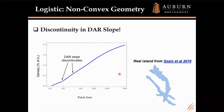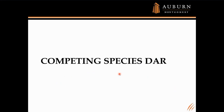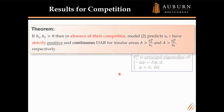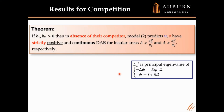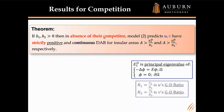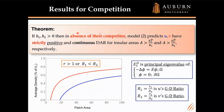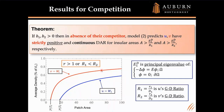DAR slope discontinuities arise from non-convex geometry. The code for competing species is almost identical — just minor modifications for the Lotka-Volterra system in NDSolve. In the absence of a competitor, our model predicts that both u and v have strictly positive continuous DAR. For any patch bigger than its critical area, you'll have a strictly positive continuous DAR for u (blue) and a strictly increasing positive DAR for v (red). For the rest of the talk, I'll assume R2 > R1 to make results easier to display.